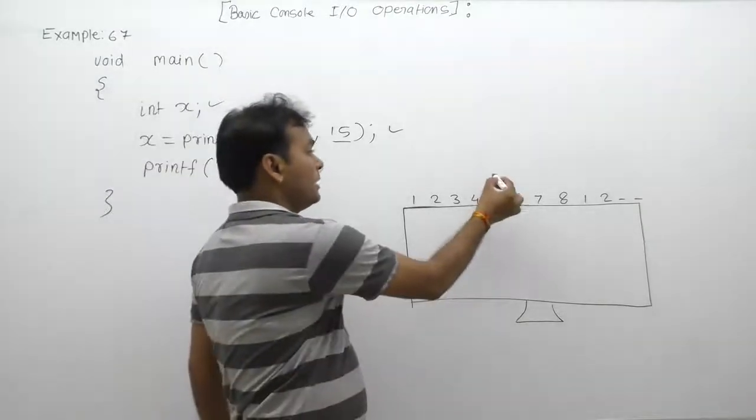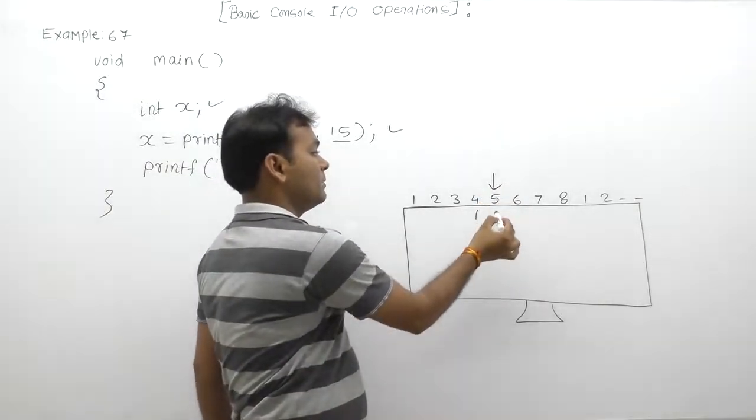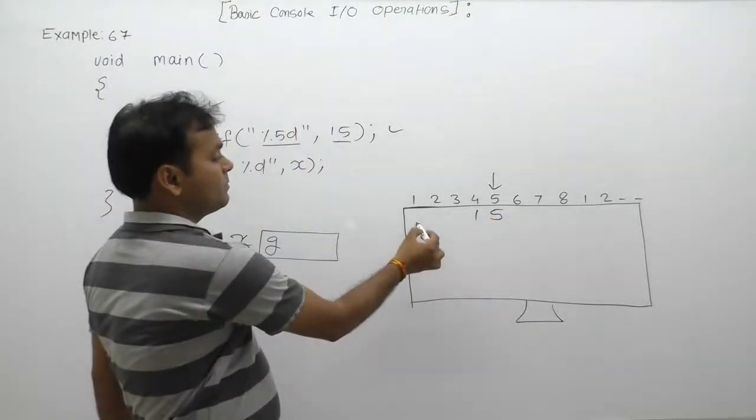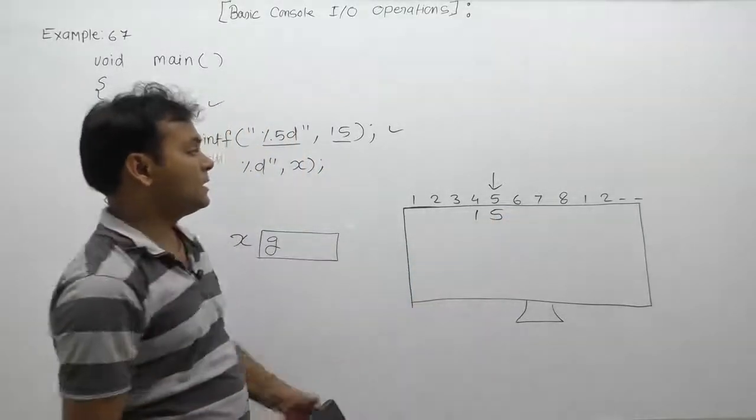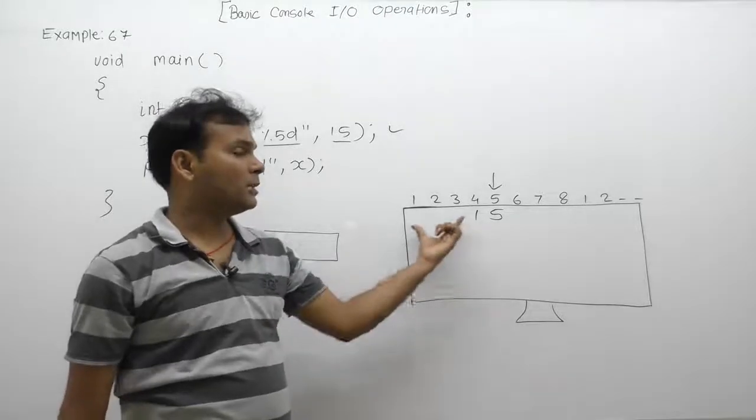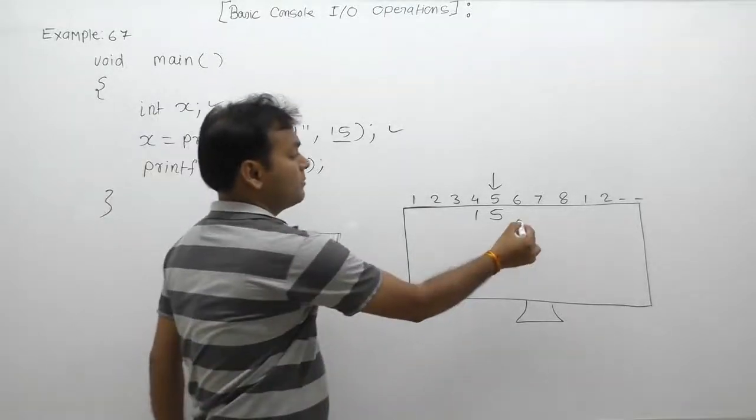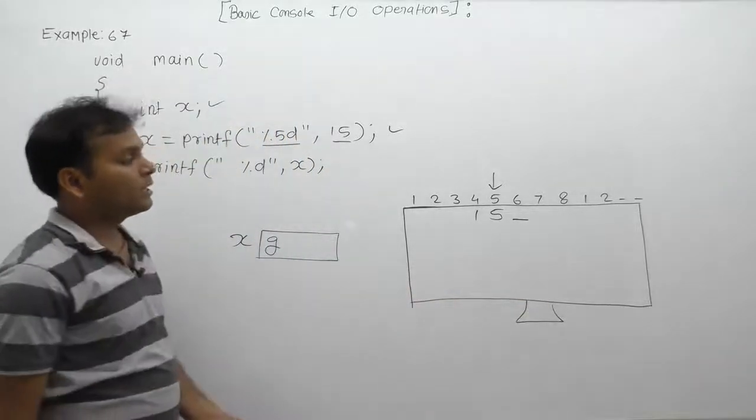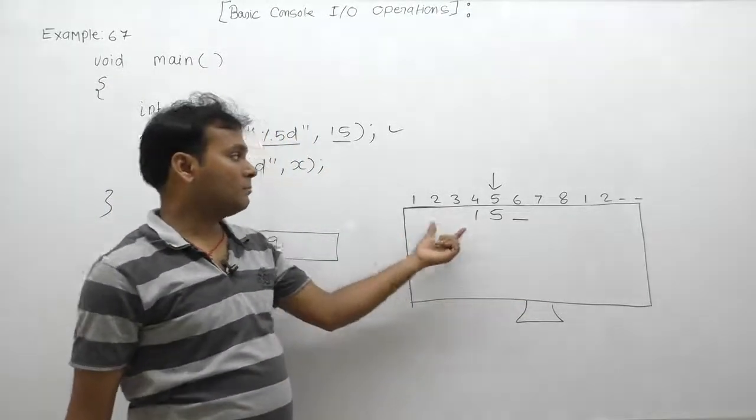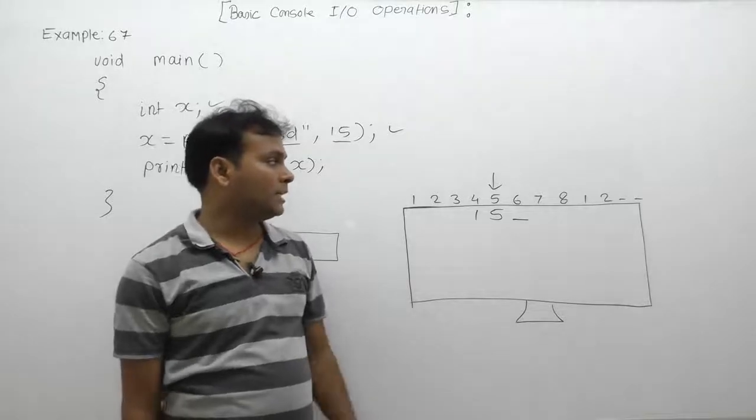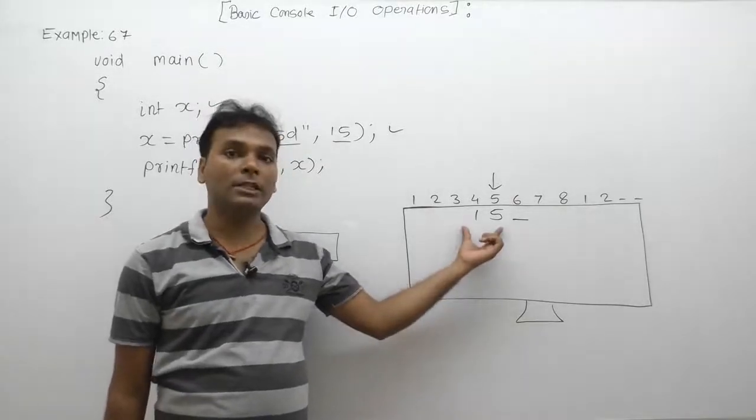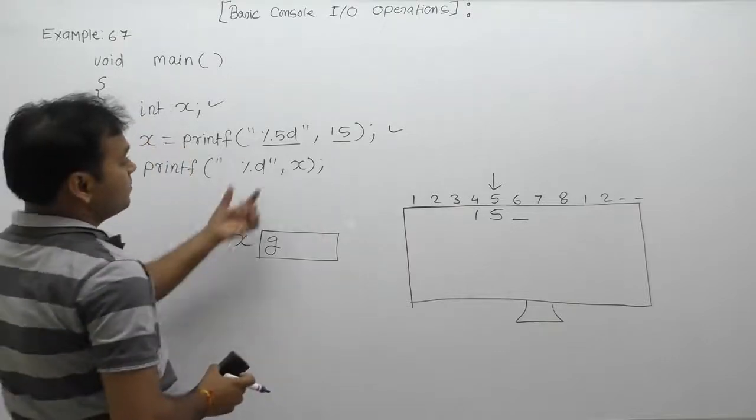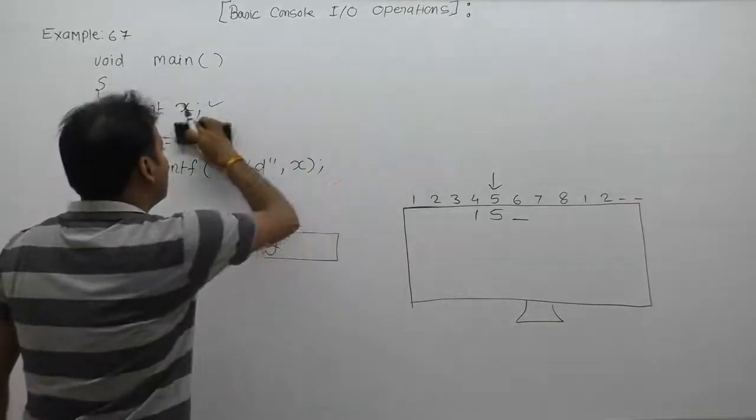From that place onwards it will print simply 15. How many spaces are filled? There are three spaces: one, two, three. Three spaces plus two digits equals total width of five. After printing 15, the cursor will be available on the next position. How many total characters are displayed? Five characters physically, which is only two digits numerically, but the total width including symbols is 5.